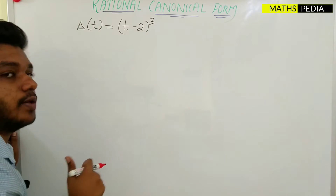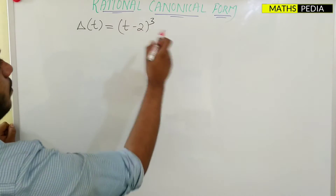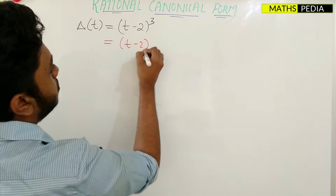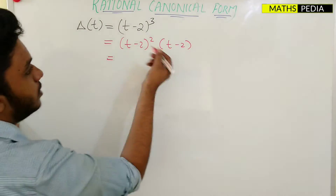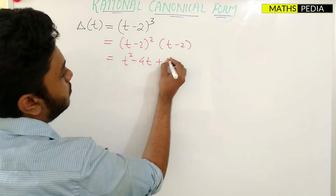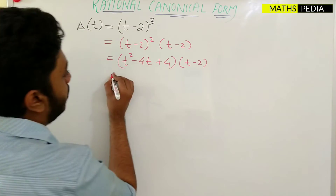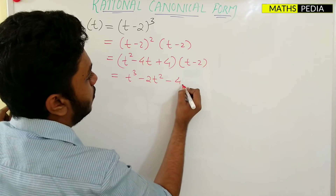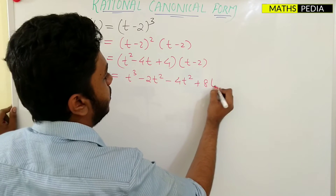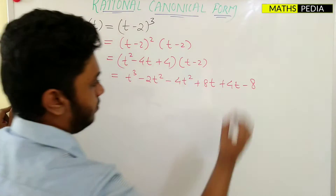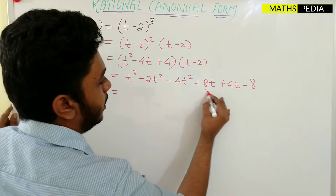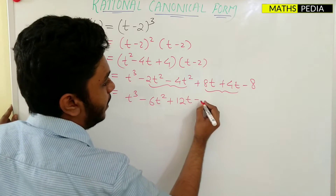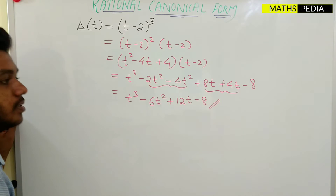Now I have taken one more question. The characteristic equation is given and we have to write the matrix of the rational canonical form. We expand (T-2)³ as (T-2)² × (T-2) = (T²-4T+4)(T-2), which multiplies out to T³ - 6T² + 12T - 8. This is the expanded form of the given characteristic equation.